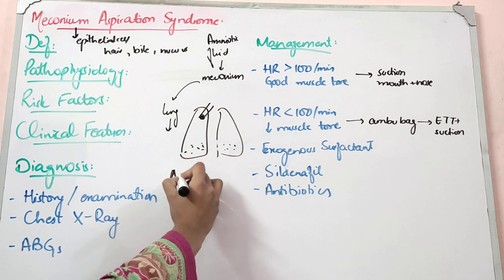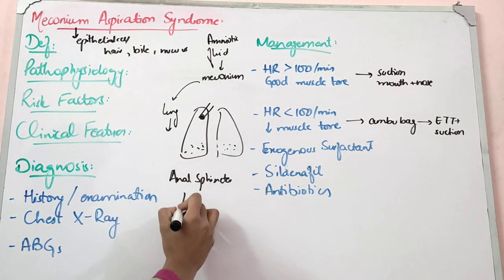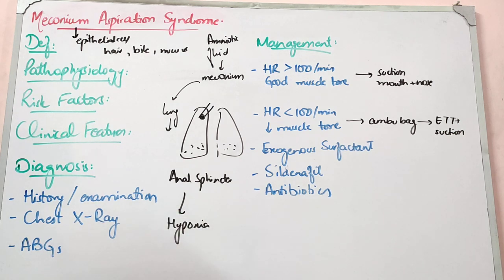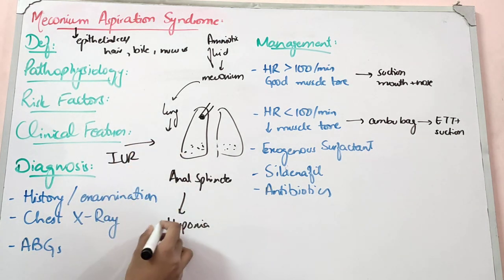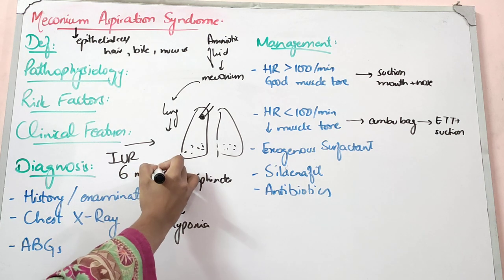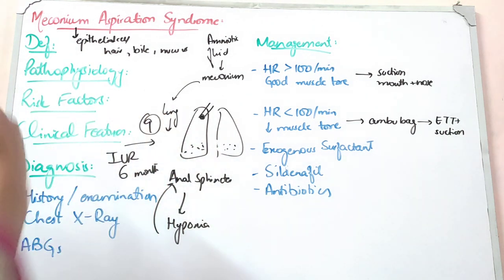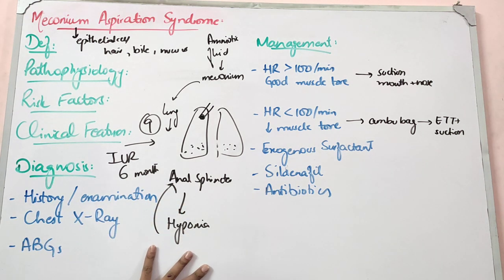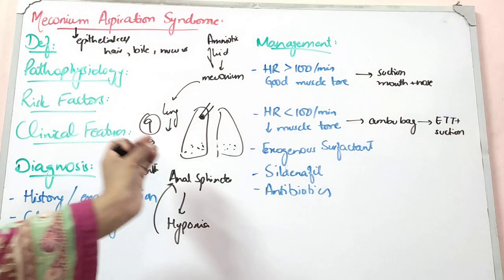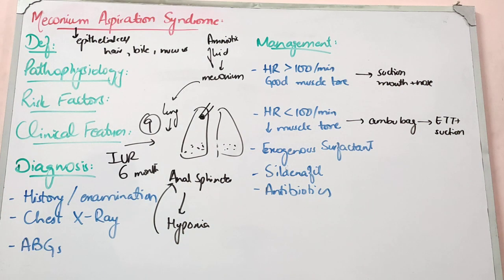Another important factor is the child's anal sphincter response to hypoxia. In the sixth month of intra-uterine life, the anal sphincter will not respond as strongly. But in the ninth month, if the child has hypoxia, the anal sphincter will relax in response. If it is relaxed, meconium will be passed and there is risk of aspiration. This is the physiological basis of meconium passage in utero.